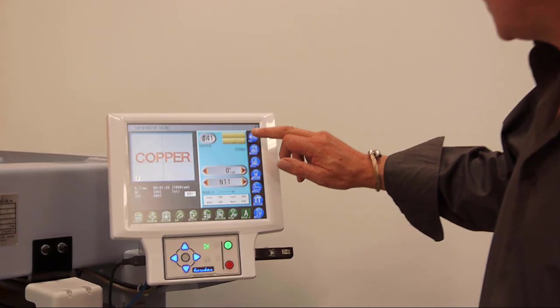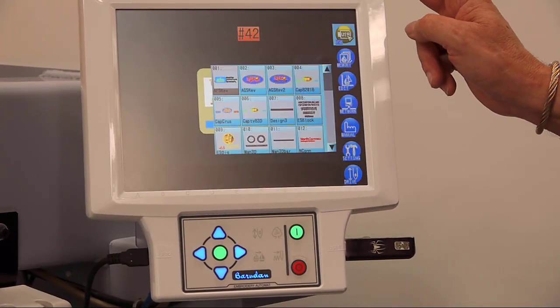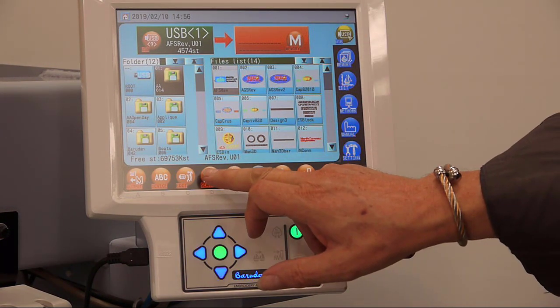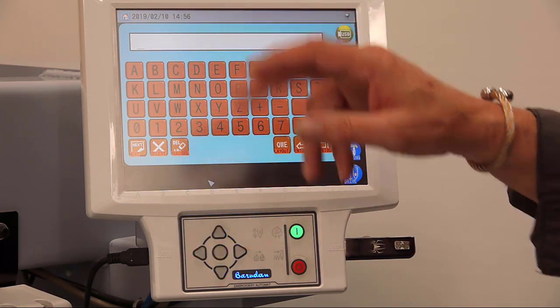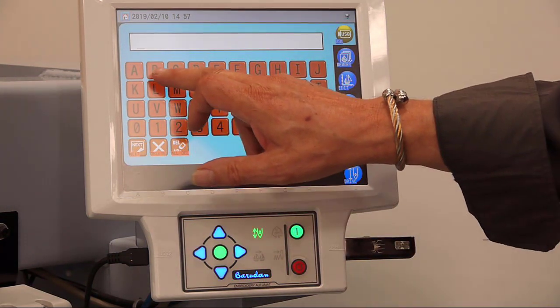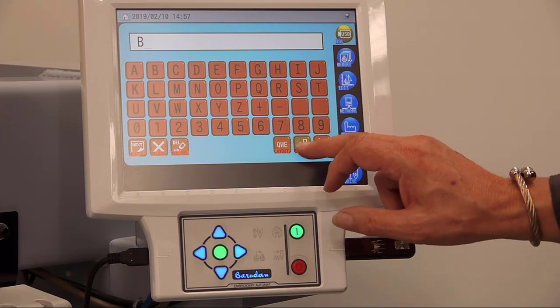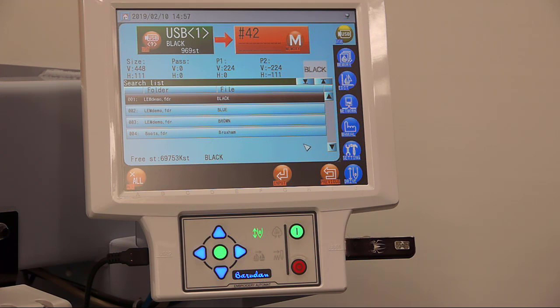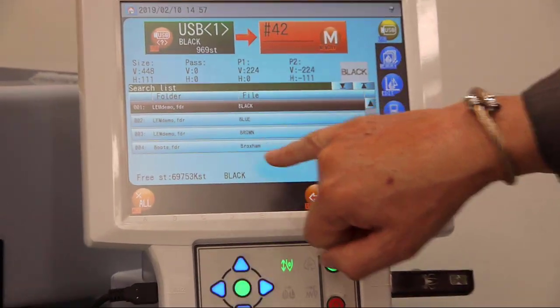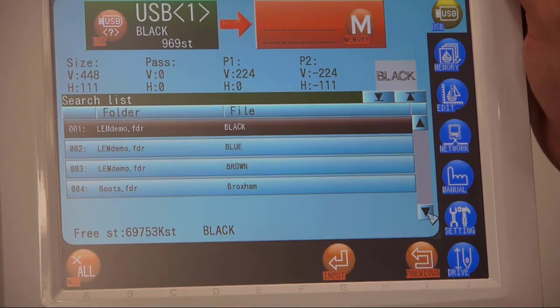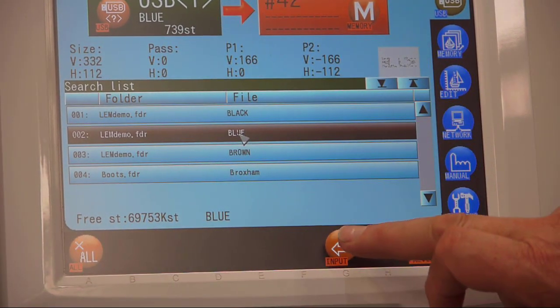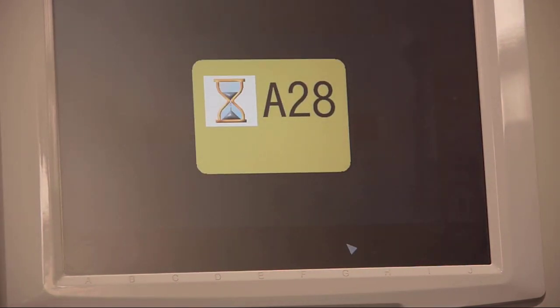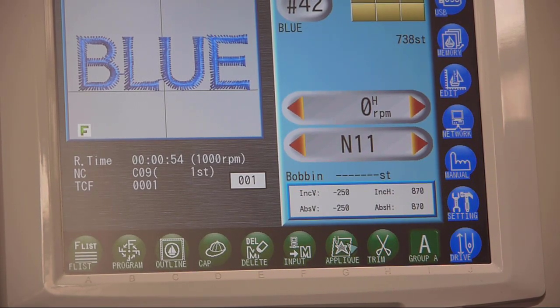What we do this time is we press USB, and again it shows the number of folders on the USB device. But this time I press the search key, and now I can type in any letters in the name that I can remember. So for example, if I type the letter B and then enter, it has found all of the designs on that USB device that begin with the letter B. You can see black, blue, brown, broxom. There are four designs on that memory device starting with a B. So let's say I want to load the blue design. I click on it, send input, and there we go.